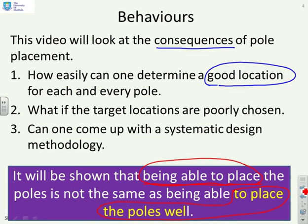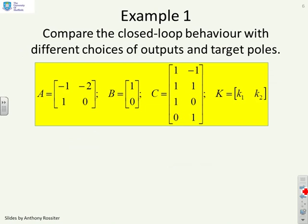Some numerical examples then. We'll start with a simple two-by-two example, and you'll notice I've given quite a lot of rows in the C matrix, so I'm extracting different possible outputs so that I can explore how this behavior works depending upon the definition of the output.